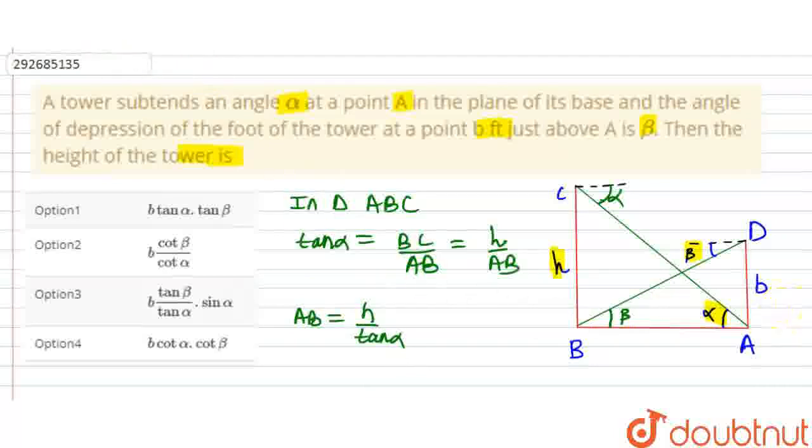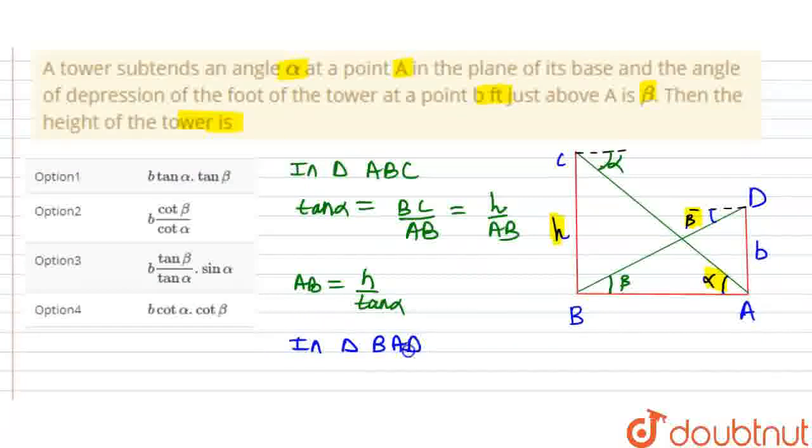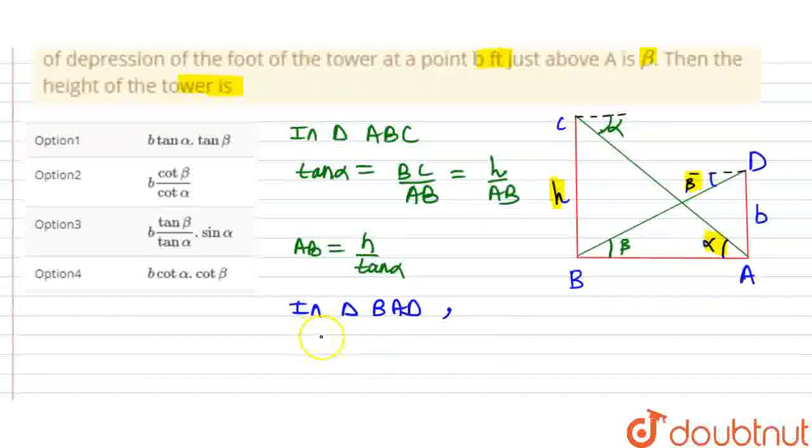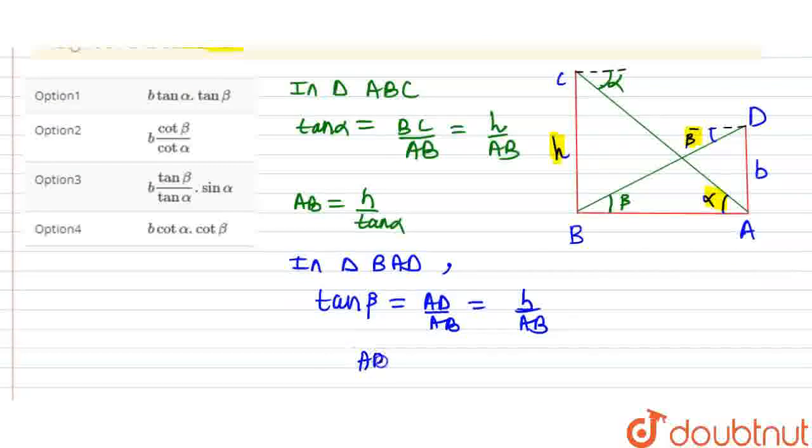Now in triangle BAD, here I will write tan beta value, which is my angle of depression. Here we have perpendicular upon base. Then we get AD upon AB. AD is B, AB as it is. So the value of AB will be B upon tan beta.